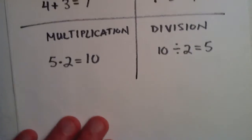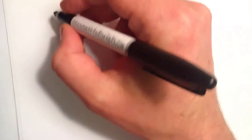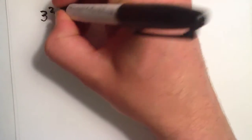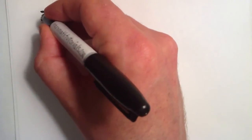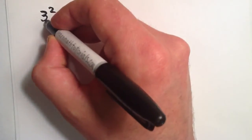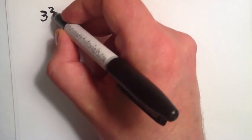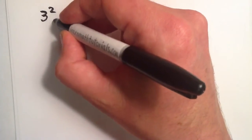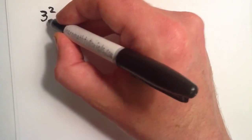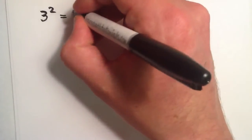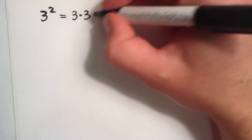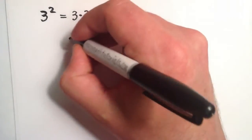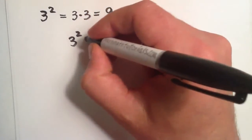Now let's jump into exponents and roots. Let's start with the exponent 3 to the second power, or 3 squared — whichever you want to call it, it's the same thing. Now, 3 is the base and the 2 is the exponent, or the power. Basically, the power tells us how many times we're going to multiply the base by itself. So this time we're going to do 3 multiplied by itself 2 times, since we have an exponent of 2. 3 times 3 is 9, so therefore 3 squared, or 3 to the second power, is simply 9.